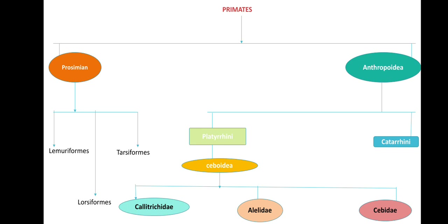Next, the classification of primates. It is divided into two. Its order is Primates, and the suborder is Prosimians or Anthropoids. Prosimians have an infraorder that includes Lemuriforms, Lorisiforms, and Tarsiforms. The Anthropoids are further divided into two infraorders: New World Monkeys and Old World Monkeys. New World Monkeys are Platyrrhini and Old World Monkeys are Catarrhini.